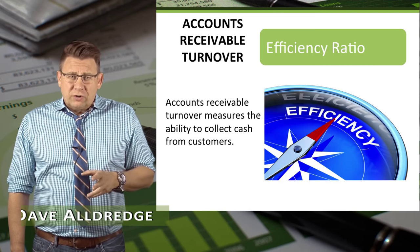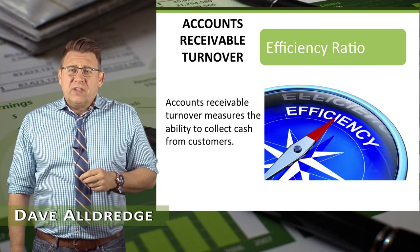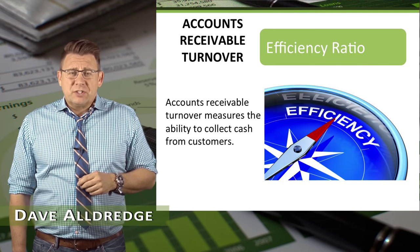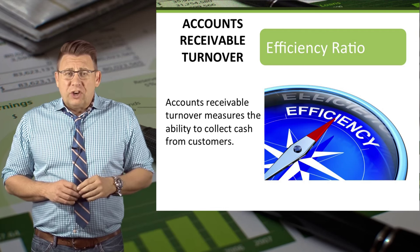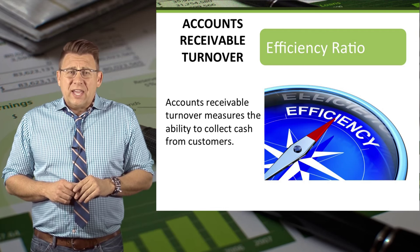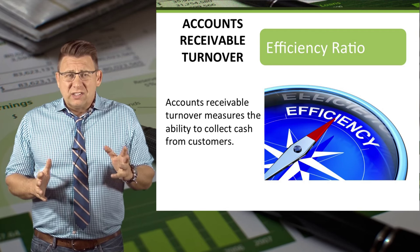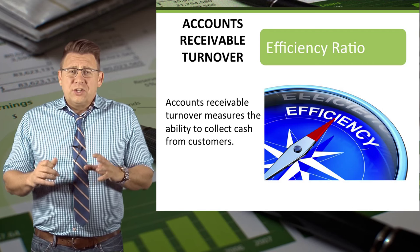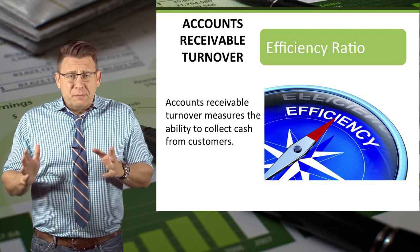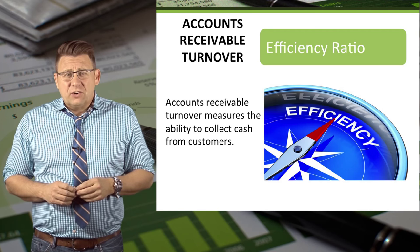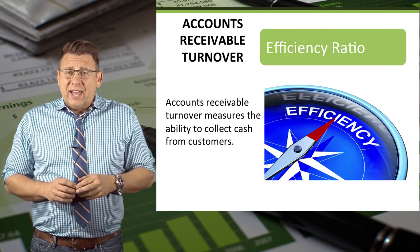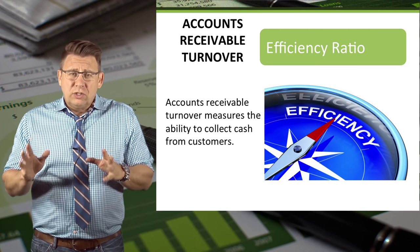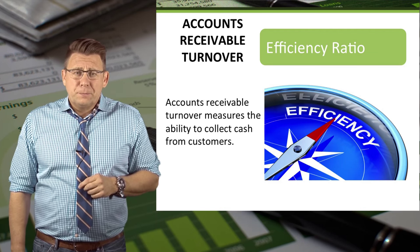Accounts Receivable Turnover measures the ability to collect cash from customers. A low ratio could indicate credit policies that are too loose. When it's too high, this may indicate that credit is too tight, and that may cause businesses to lose sales to good customers.